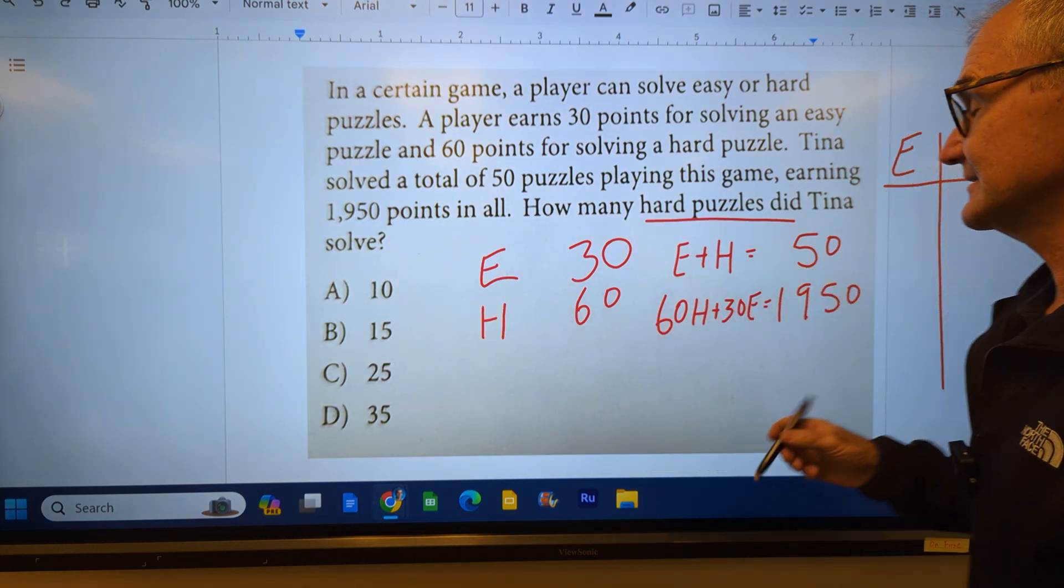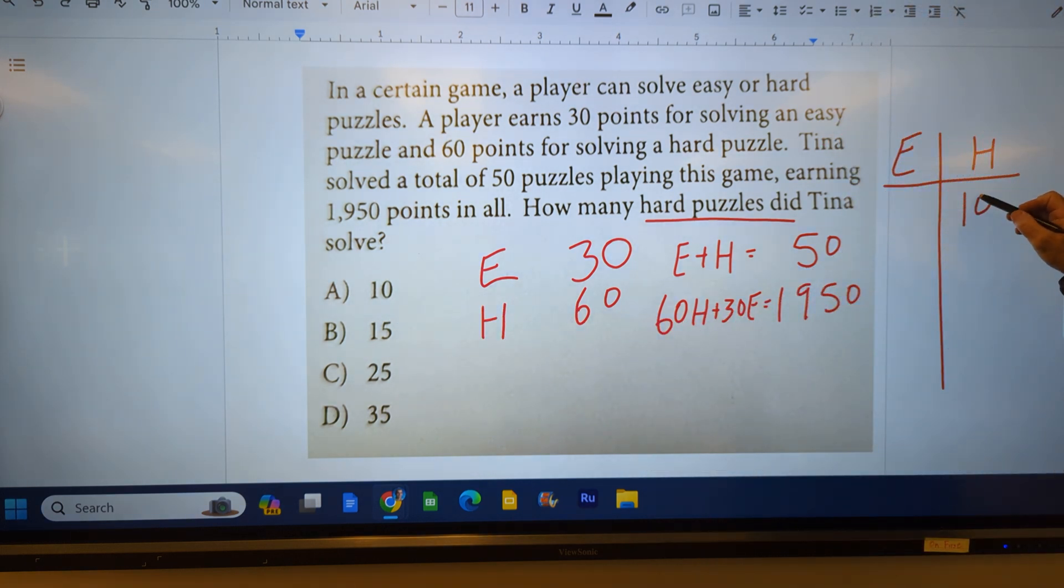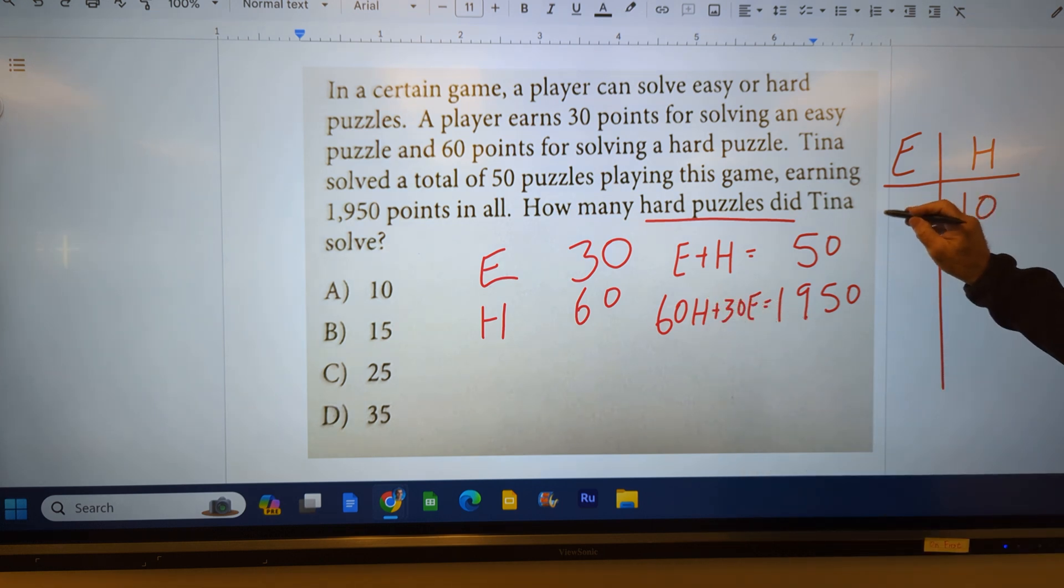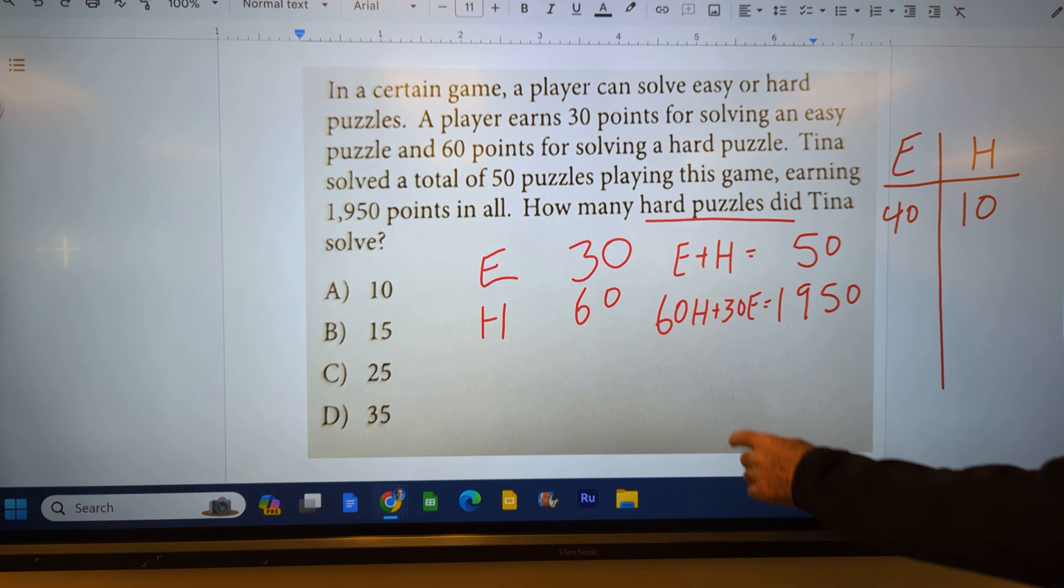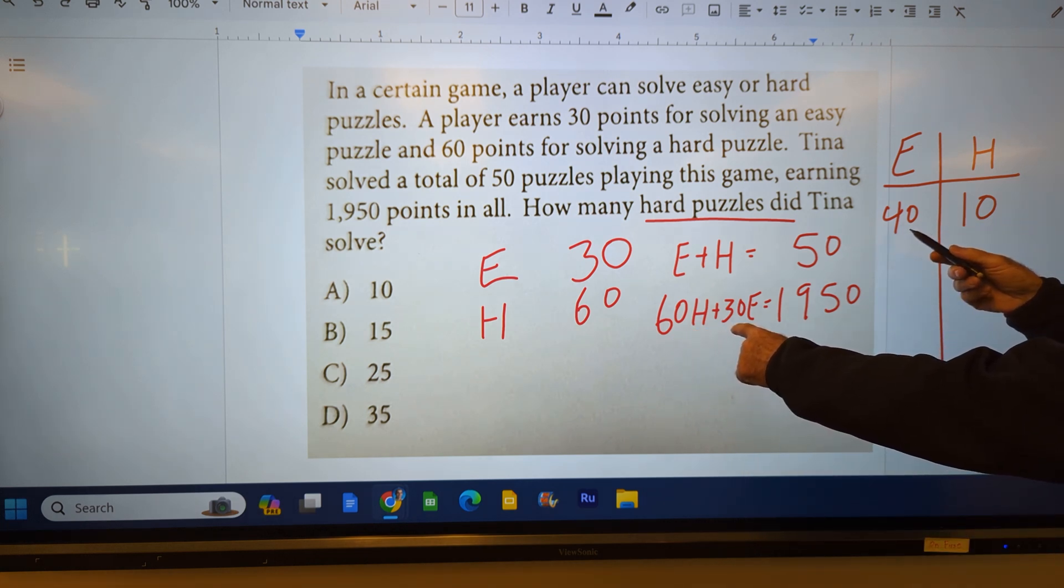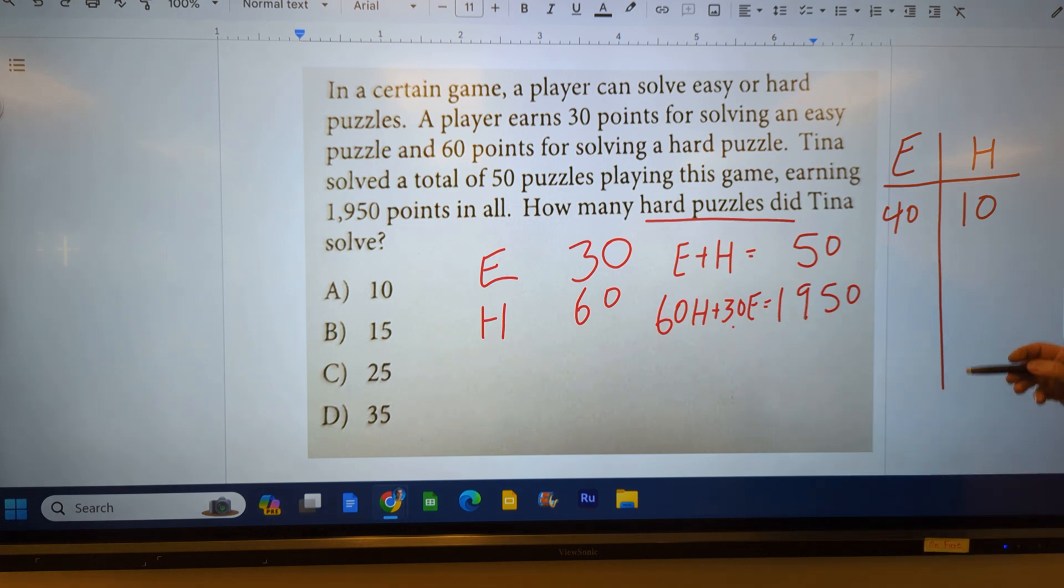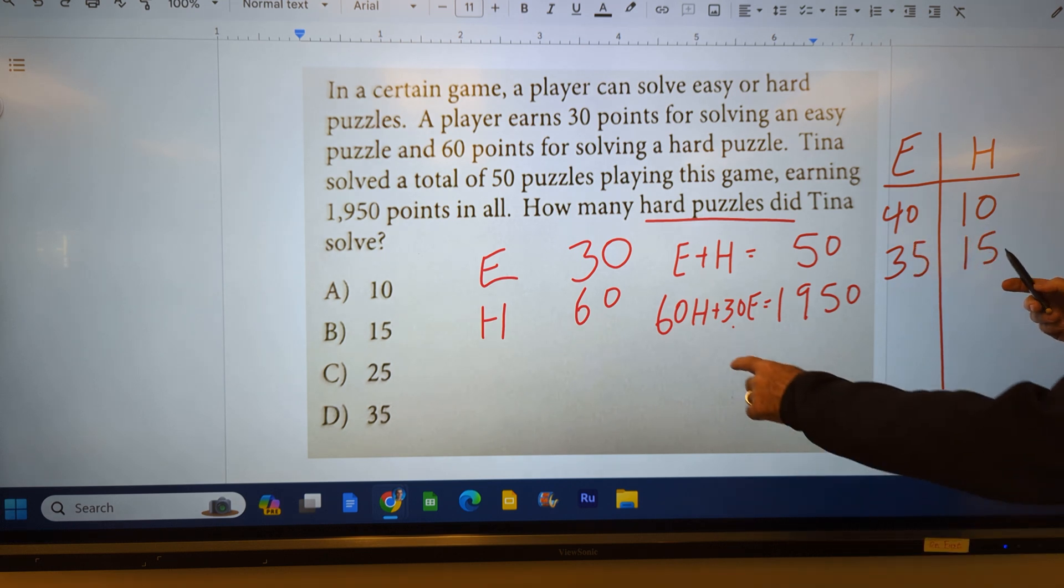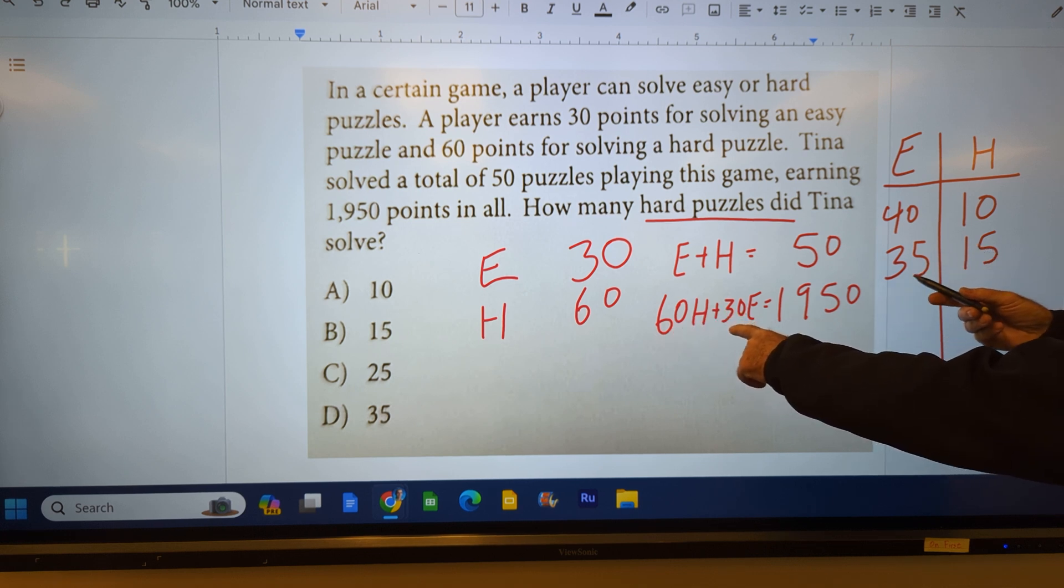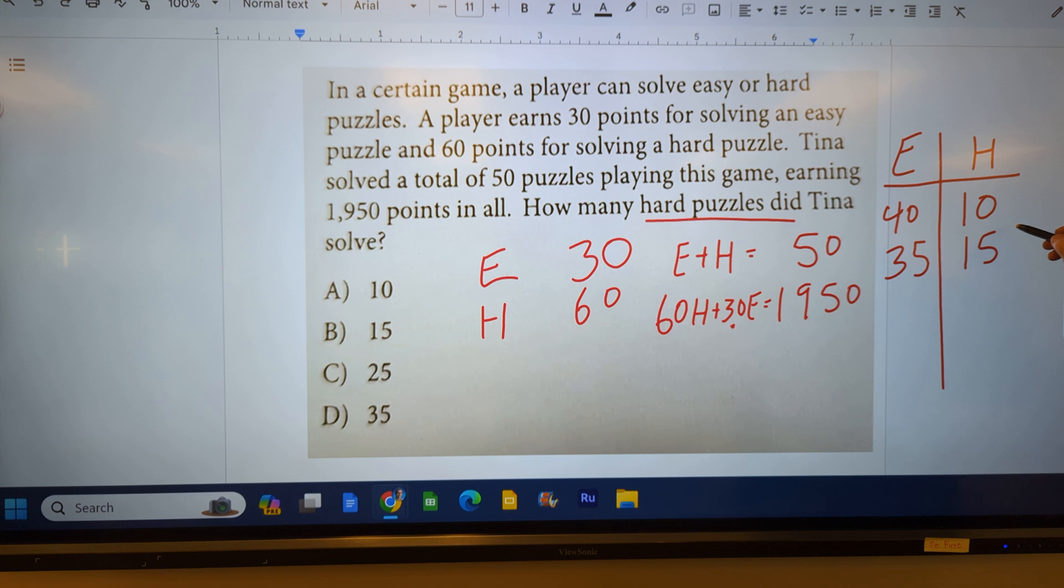Well, if this solution is 10, she solved 10 hard puzzles. That would mean it would have to be 40 easy puzzles. Let me plug that in here and see if it even makes sense. 600 plus 1,200 isn't 1,950. It's close, though. Let's try 15 hard puzzles. That means 35 easy puzzles. So 15 times 60 is 900 plus 1,050 is equal to 1,950. That's the answer that works.